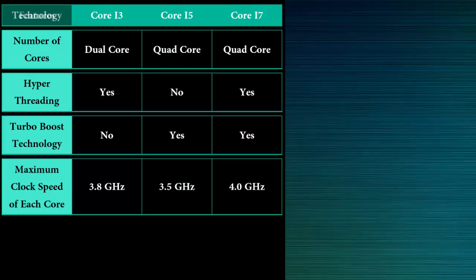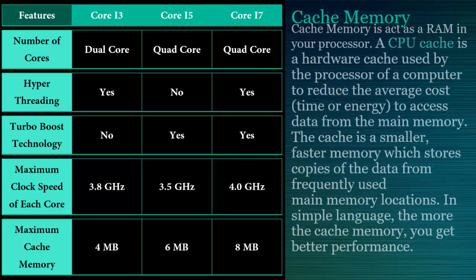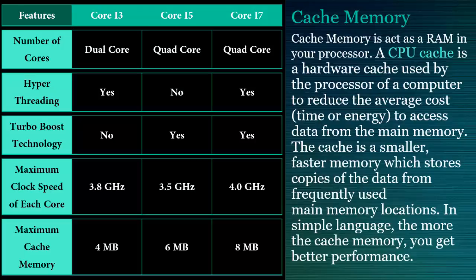And lastly, there is cache memory. Core i3 has 4 MB of internal cache, whereas Core i5 has 6 MB and Core i7 has 8 MB of internal cache memory. Cache memory acts as RAM in your processor. A CPU cache is a hardware cache used by the processor to reduce the average time or energy needed to access data from the main memory, i.e. RAM. The cache is a smaller, faster memory which stores copies of data from frequently used main memory locations. In simple language, the more cache memory you have, the better the performance.